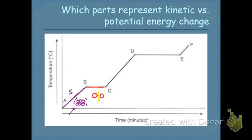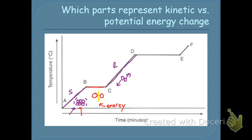Initially, energy is being used to vibrate the molecules so they go faster and faster. But once they get to the melting point, the energy is now being used to break apart or weaken the IMF between the particles. After all the interaction has been weakened, it continues on as a liquid — the particles are now free to move past each other. They move faster and faster until they're ready to boil or evaporate. To evaporate, the particles have to separate, so the energy is now used to break the IMF even further.